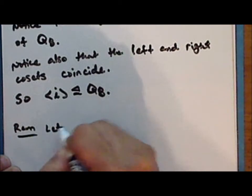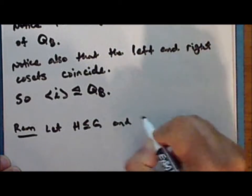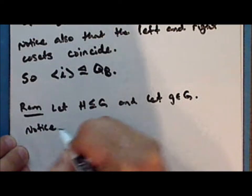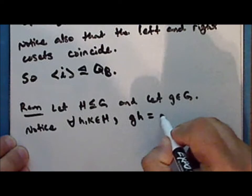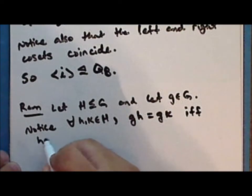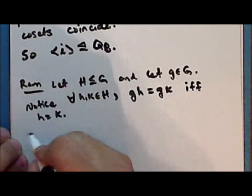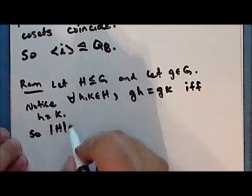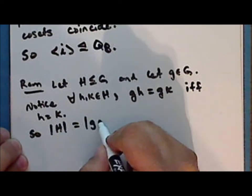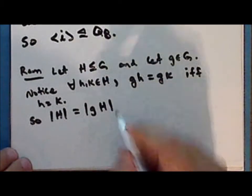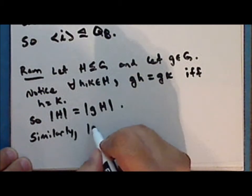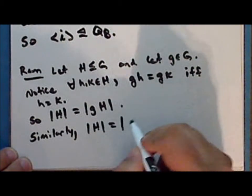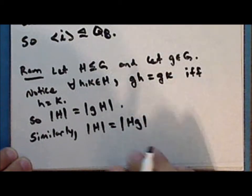Let H be a subgroup of a group G and let g be an element in G. For every pair of elements h and k in H, g times h equals g times k if and only if h equals k, so the number of elements in H equals the number of elements in the left coset of H containing g, and likewise equals the number of elements in the right coset of H containing g.